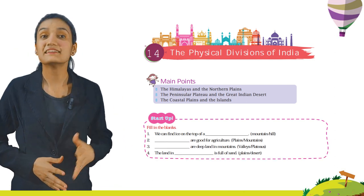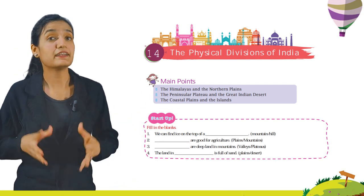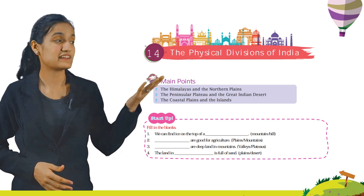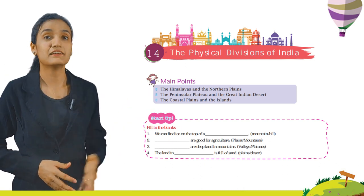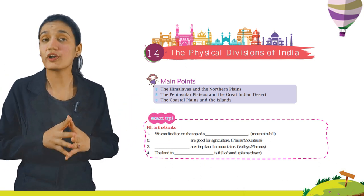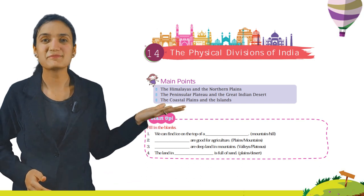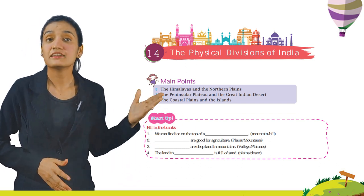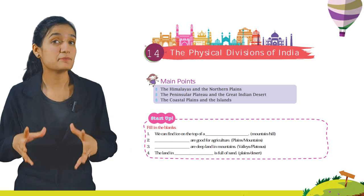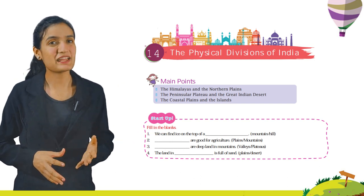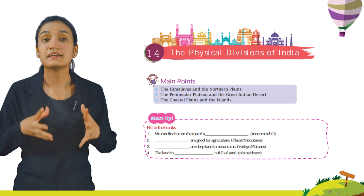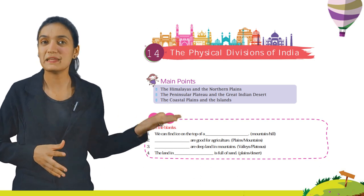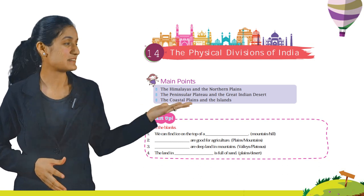Filling the blanks. First, we can find ice on the top of a dash — mountain, hill. Second, dash are good for agriculture — plains, mountains. Third, dash are deep land in mountains — valleys, plateaus. Fourth, the land in dash is full of sand — plains, desert.